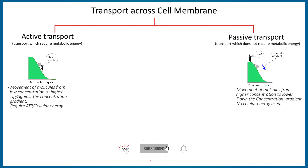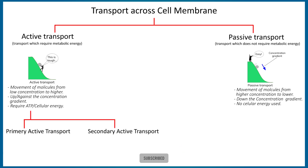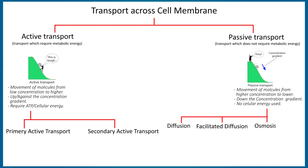The active transport is of two types: primary active transport and secondary active transport. While the passive transport examples are simple diffusion, facilitated diffusion, and osmosis.